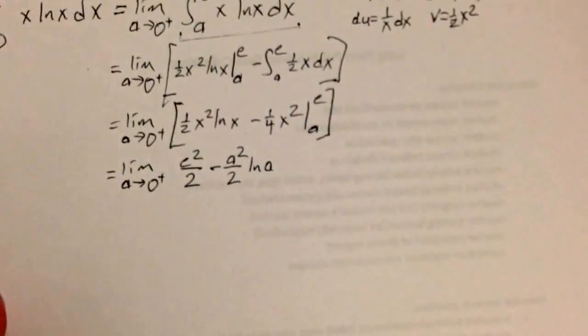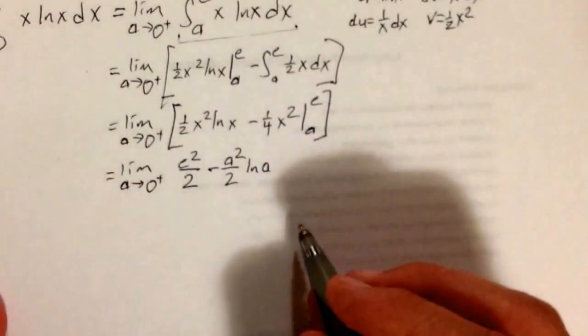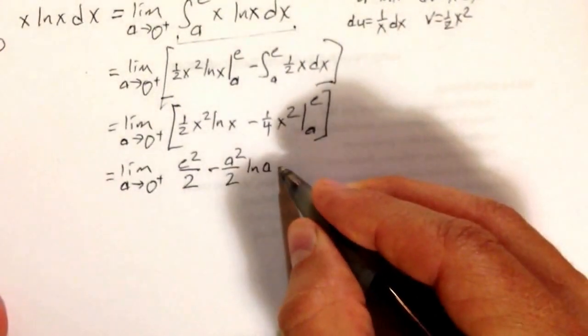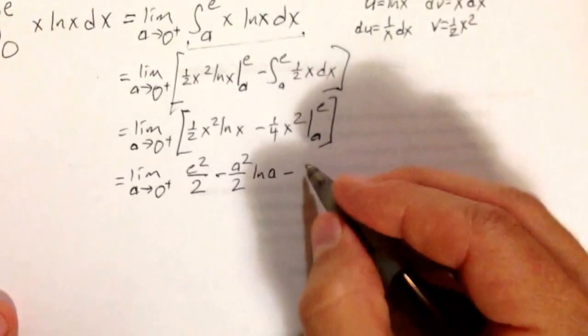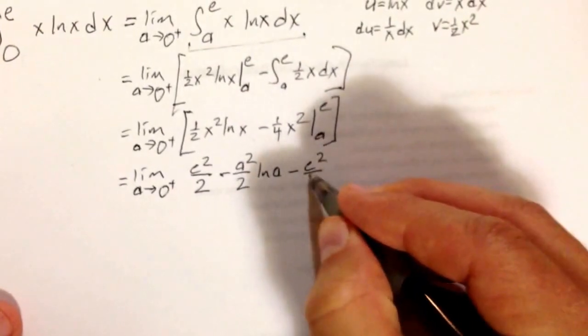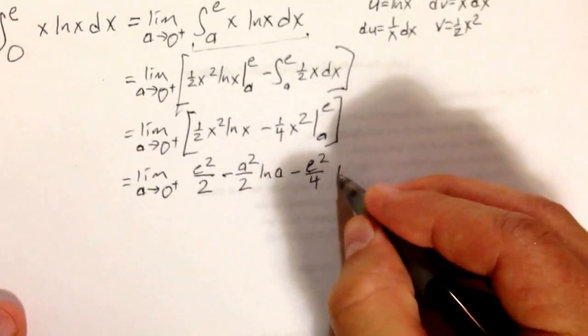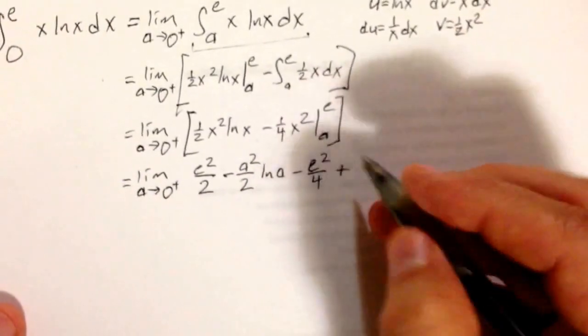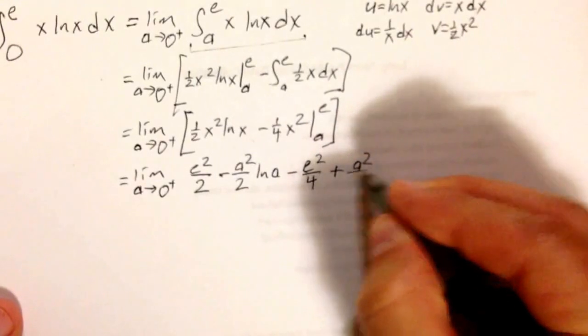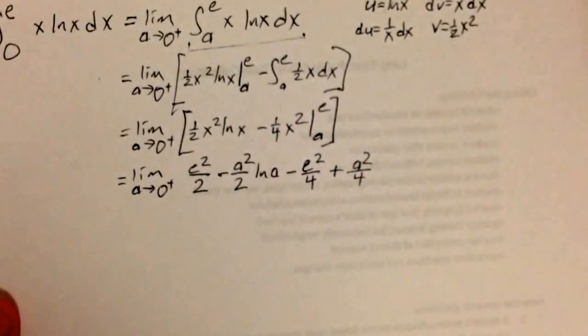That's a little tricky. Then this term right here, negative e squared over 4, and then what do I have here? I have positive a squared over 4.